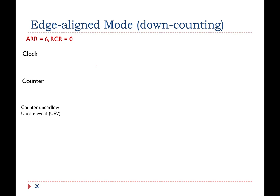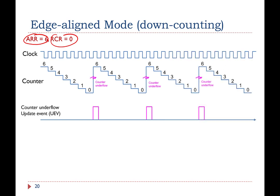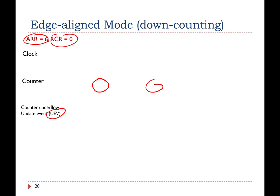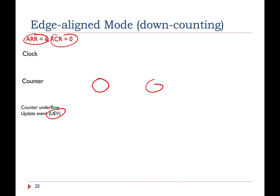In edge-aligned down-counting mode, with the same ARR of 6, the counter counts from 6 down to 0. Counter underflows occur instead of overflows, but the same update event flag is set — it's not a different flag. Down-counting produces a left-edge-aligned update event (since counting starts at ARR), while up-counting produces a right-edge-aligned update event.